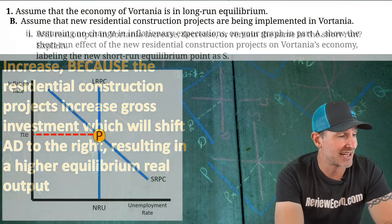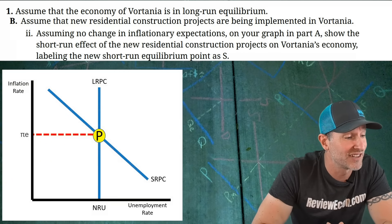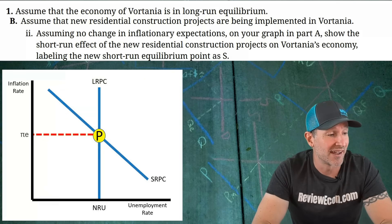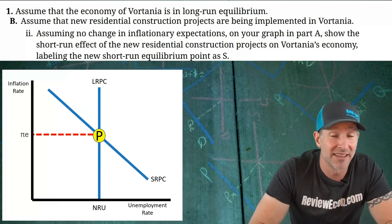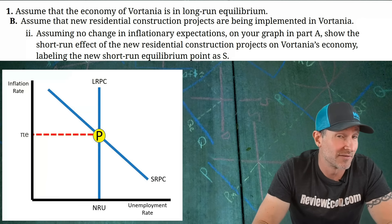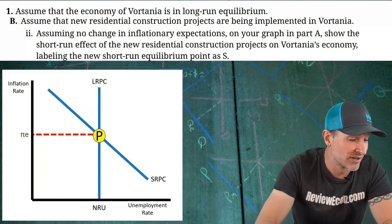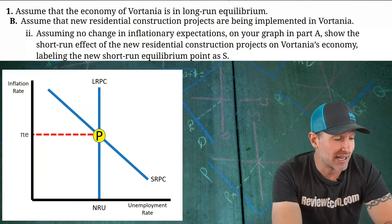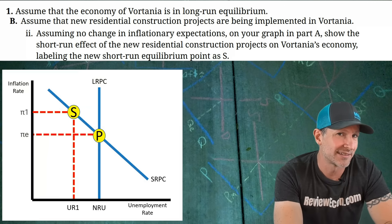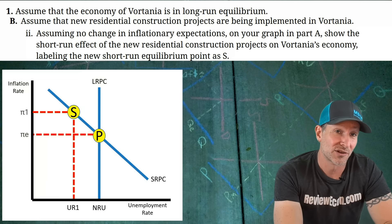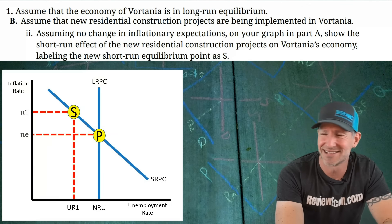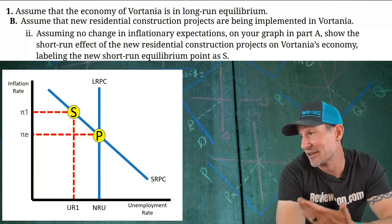For Part B-II, assuming no change in inflationary expectations, we show the short-run effect of new residential construction on the Phillips curve graph and label the new short-run equilibrium as S. Since AD shifted rightward in the AS-AD model, we have higher inflation and lower unemployment. A point labeled S that is higher on the short-run Phillips curve and to the left will earn the point. Bringing it to the axes is good practice but probably not required.